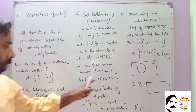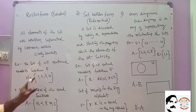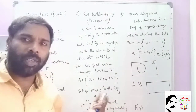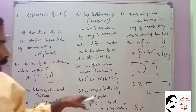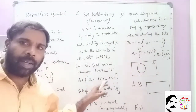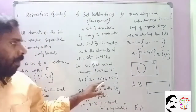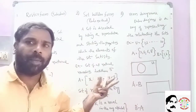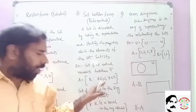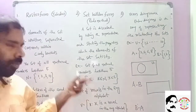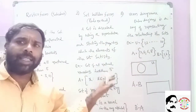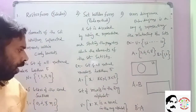In Set Builder Form, N equals {1, 2, 3, 4}. We represent this as: the set of X maps to X belongs to N — natural numbers — and X is less than 5. So the notation is: {X : X ∈ N, X < 5}.